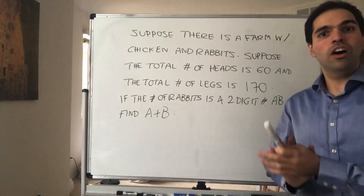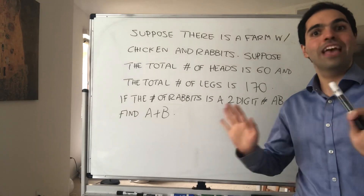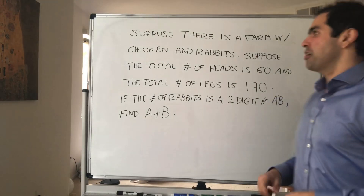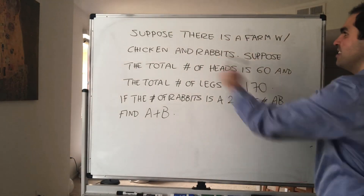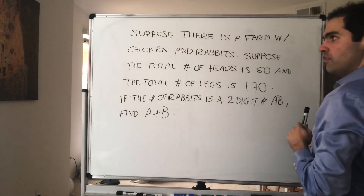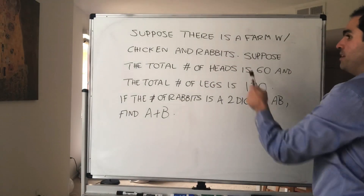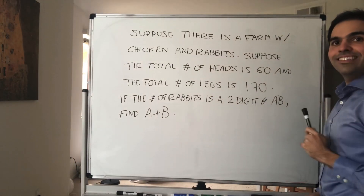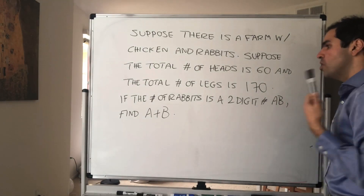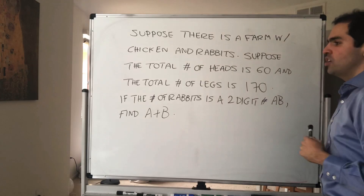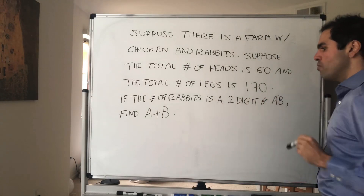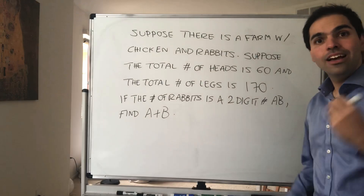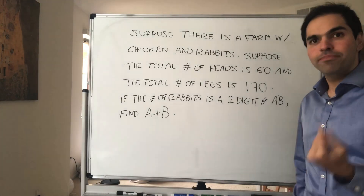In particular, we will not be able to use any equations because we don't know what those are. So the question is: suppose you have a farm with chickens and rabbits. The total number of heads is 60 and the total number of legs is 170. If the number of rabbits is a two-digit number AB, find A plus B.